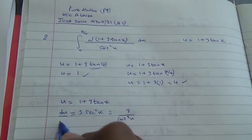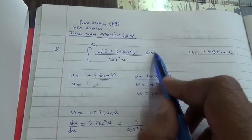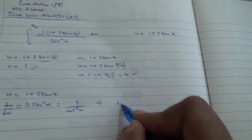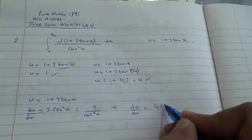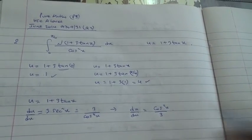This is du over dx. But what do we have here? We have dx. So therefore we're going to make dx over du. And then dx is going to give us cos square x over 3. So this is what we're going to use.